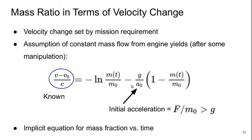So this a₀ is a design parameter. This is the initial acceleration of the rocket and it's F, the thrust force divided by the initial mass, and that had better be greater than g or else this rocket is not going anywhere. And so what this equation really is is an implicit equation for the mass fraction m(t) over m₀ as a function of time.